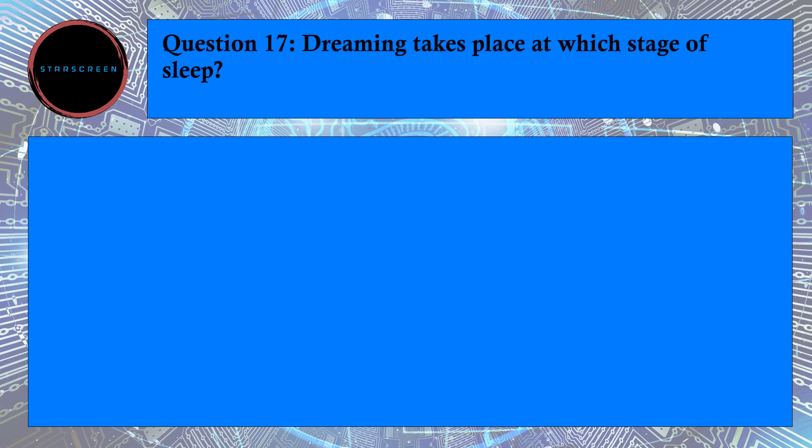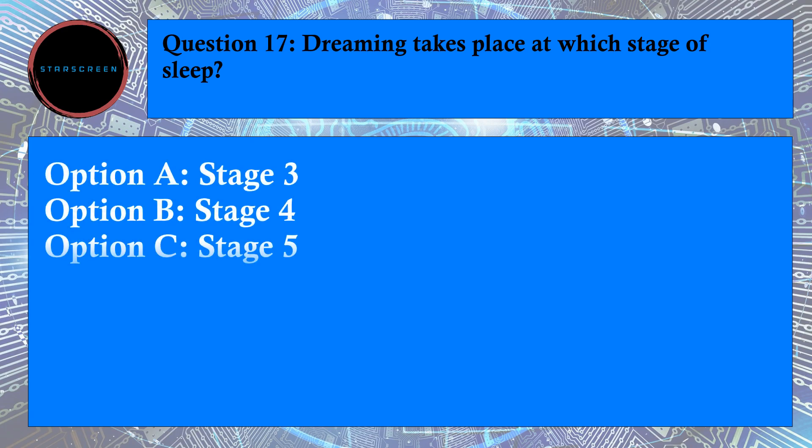Question number 17: Dreaming takes place at which stage of sleep? Option A, Stage 3, Option B, Stage 4, and Option C, Stage 5. Correct answer is C, Stage 5. For answer, refer to CAP715, Chapter 4, Paragraph number 5.1.2.